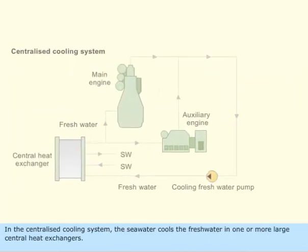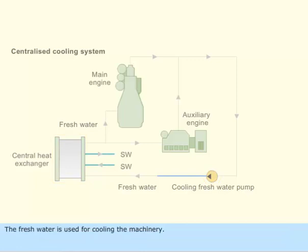In the centralized cooling system, the seawater cools the freshwater in one or more large central heat exchangers. The fresh water is used for cooling the machinery.